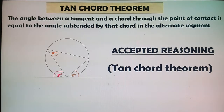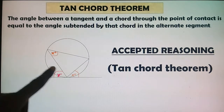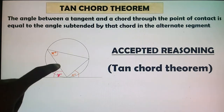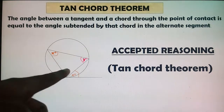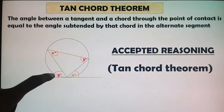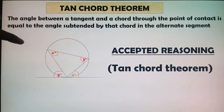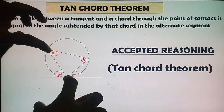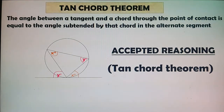Now what if we have angle y? Here is our tangent again, and this is our chord. The angle between the tangent and the chord equals the angle subtended in the alternate segment. Moving from this chord to the alternate segment, we get the corresponding angle equal to y. This is the most important thing to understand — the basics of the Tan-Chord Theorem — so that you can apply it.